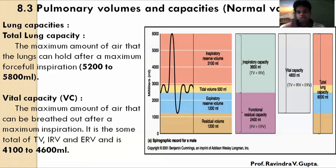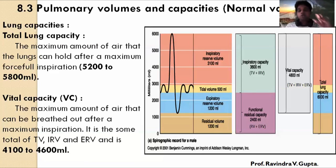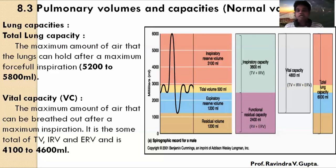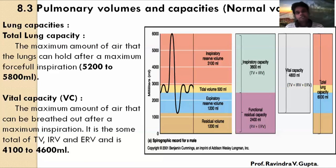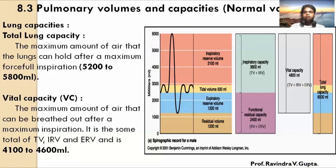Vital means Functional Capacity — how much air comes into the lungs and how much air goes out, how much air is utilized. From Total Lung Capacity, if we minus the Residual Volume, we get Vital Capacity. This is all about Vital Capacity.